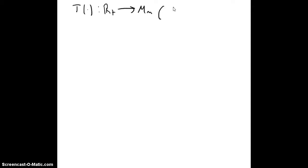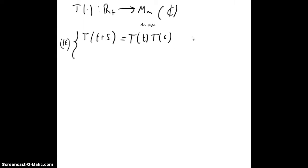Now let's consider matrix semigroups. We will have T going from R+ to Mn of complex numbers — so these are all complex n×n matrices. The functional equation will be, once again, T(t+s) equals T(t)·T(s), for all t,s greater than or equal to zero, and T(0) equals the identity — now in the matrix world.